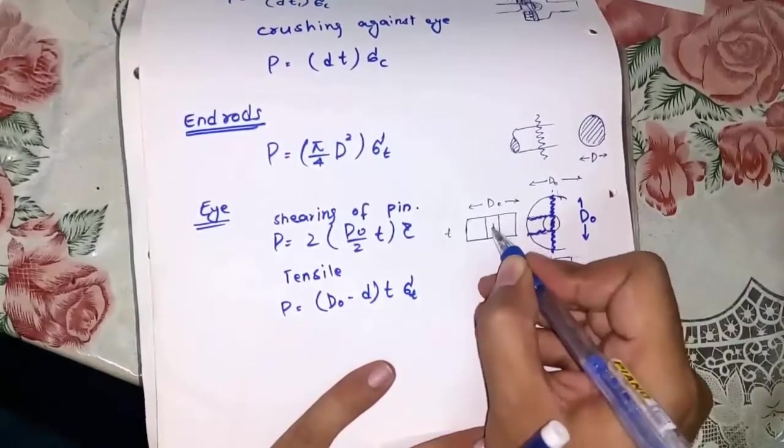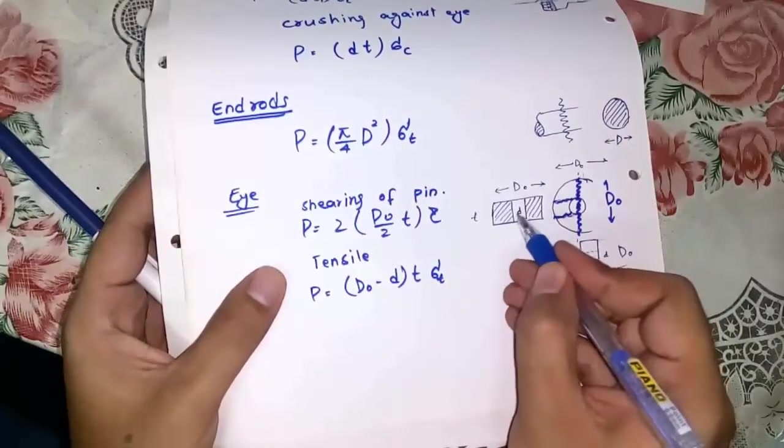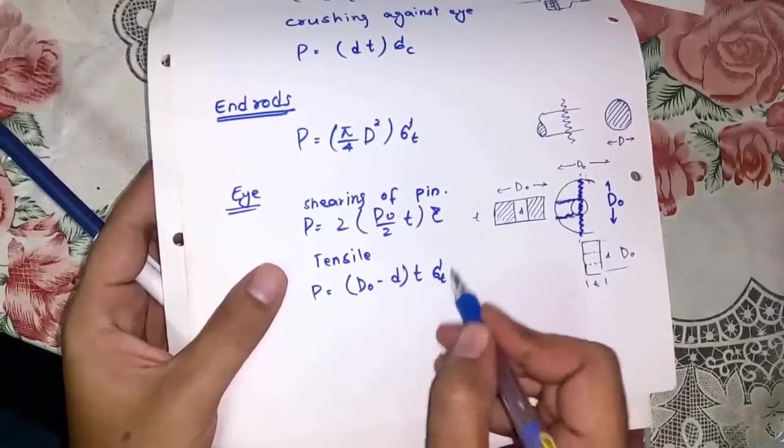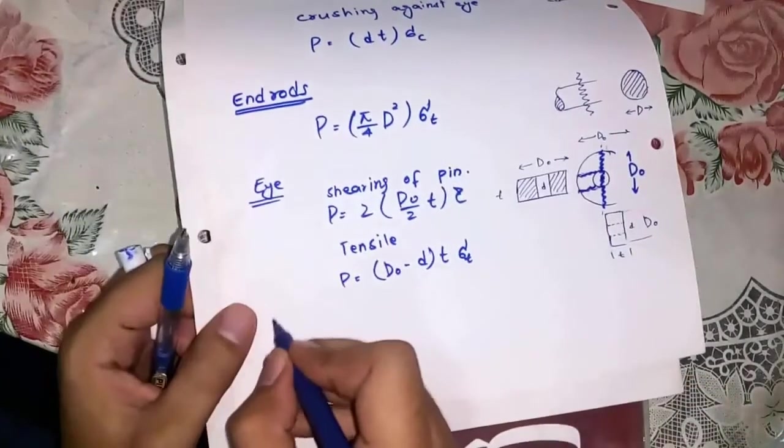And hole has diameter d. Concerned area is capital D0 excluding small d into t. Let's discuss the failure of fork.